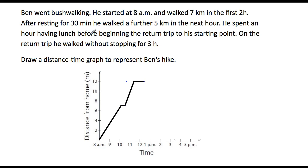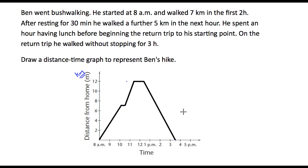Now it says he then returned to his starting point, walking without stopping for three hours. His starting point is back down on zero kilometers from home. By the way, that label should be kilometers, not meters — I'll write that in. At this stage he's 12 kilometers from home. He leaves at 12:30, and three hours later — 1:30, 2:30, 3:30 — he's home. So we draw a straight line from that point down to zero, and there's our distance-time graph representing Ben's hike.